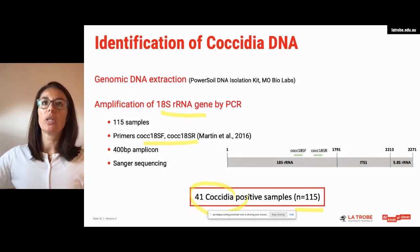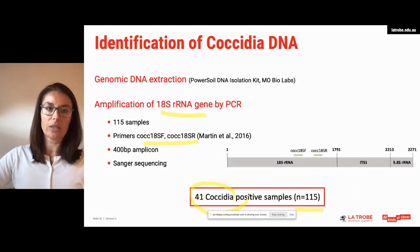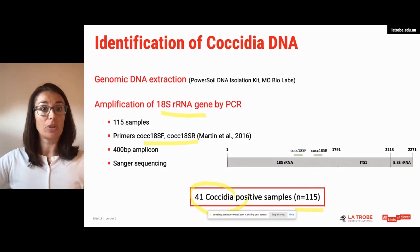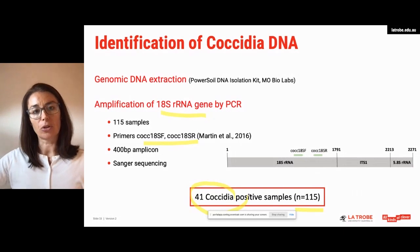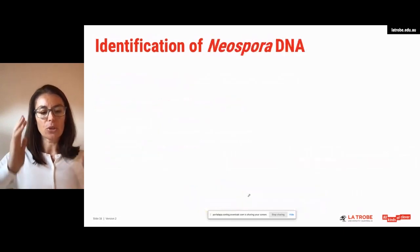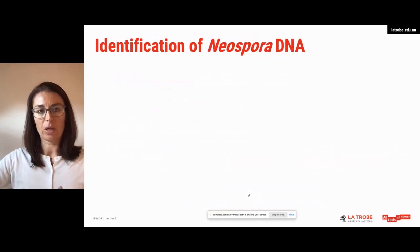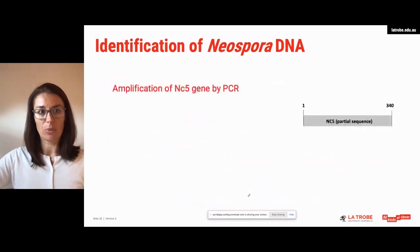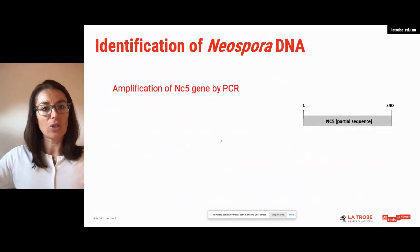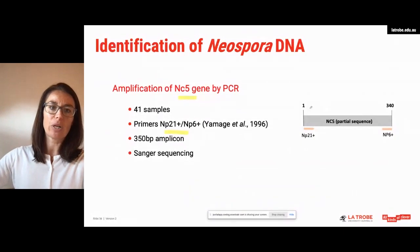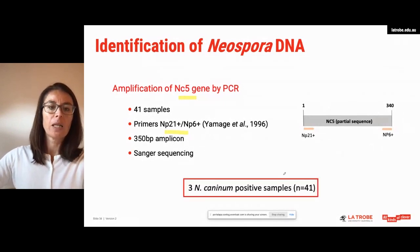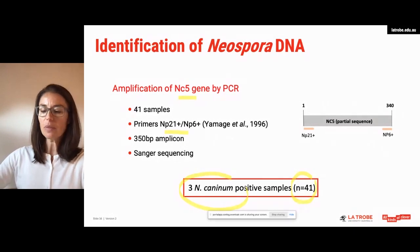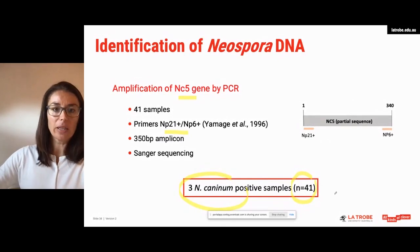Out of the 115 samples, we had 41 PCR-positive coccidian samples. We sequenced all 41 and identified quite a range of parasites including Cystoisospora, Sarcocystis, Hammondia, and of course Neospora. For today's purpose I will only focus on the Neospora positive samples. Once we completed this generic coccidian screening, we wanted to confirm the Neospora samples more specifically, so we performed a PCR screen on the NC5 gene using conserved primers previously published to amplify this Neospora caninum gene, producing an amplicon of 350 base pairs, followed by Sanger sequencing.